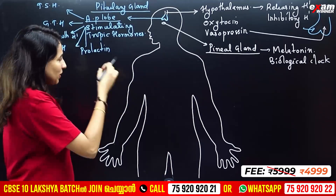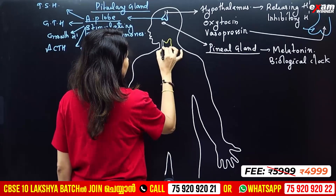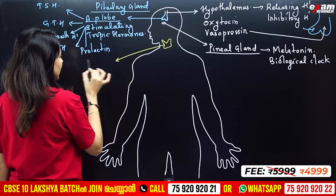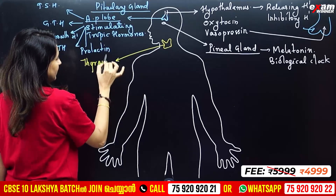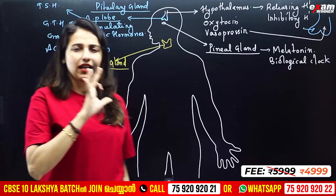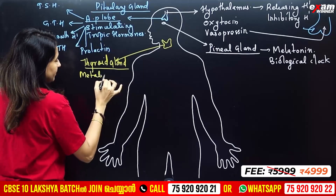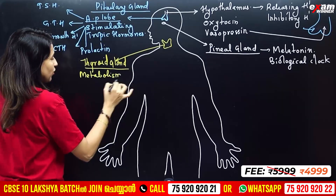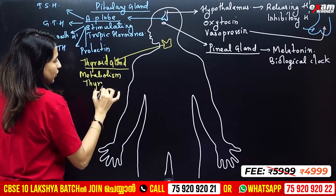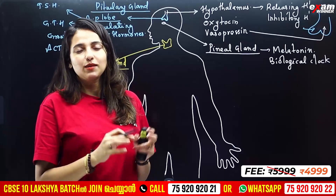The thyroid gland is called the butterfly gland. It controls whole body metabolism. The main hormone of the thyroid gland is thyroxine.